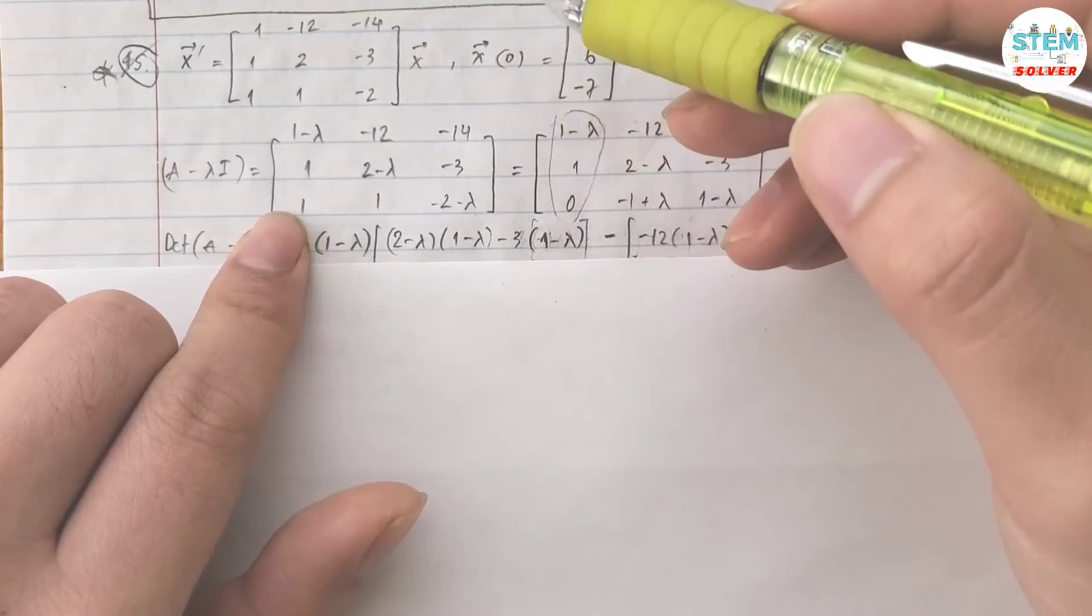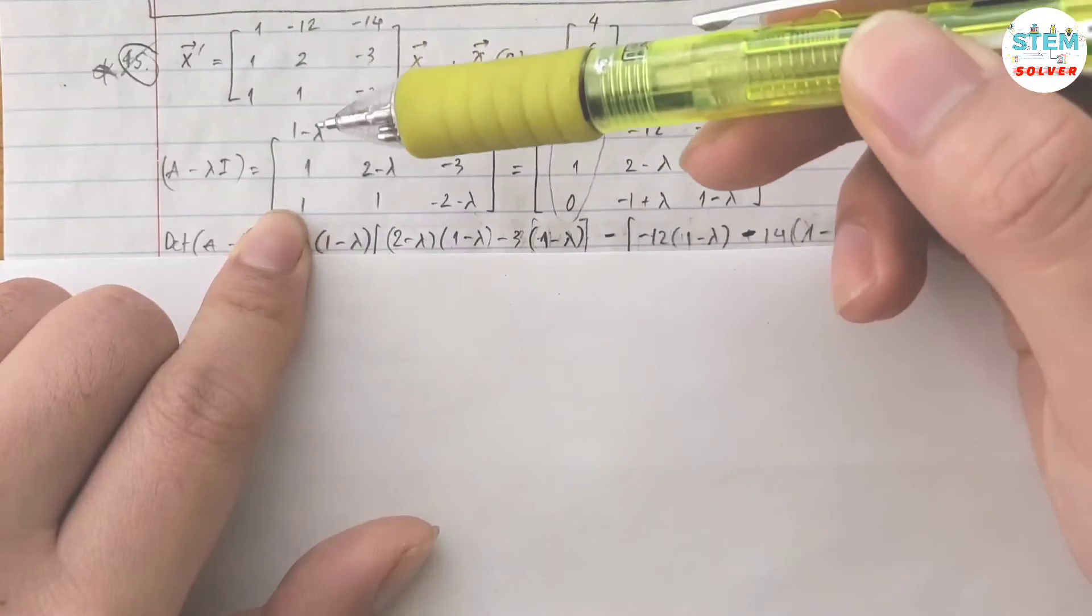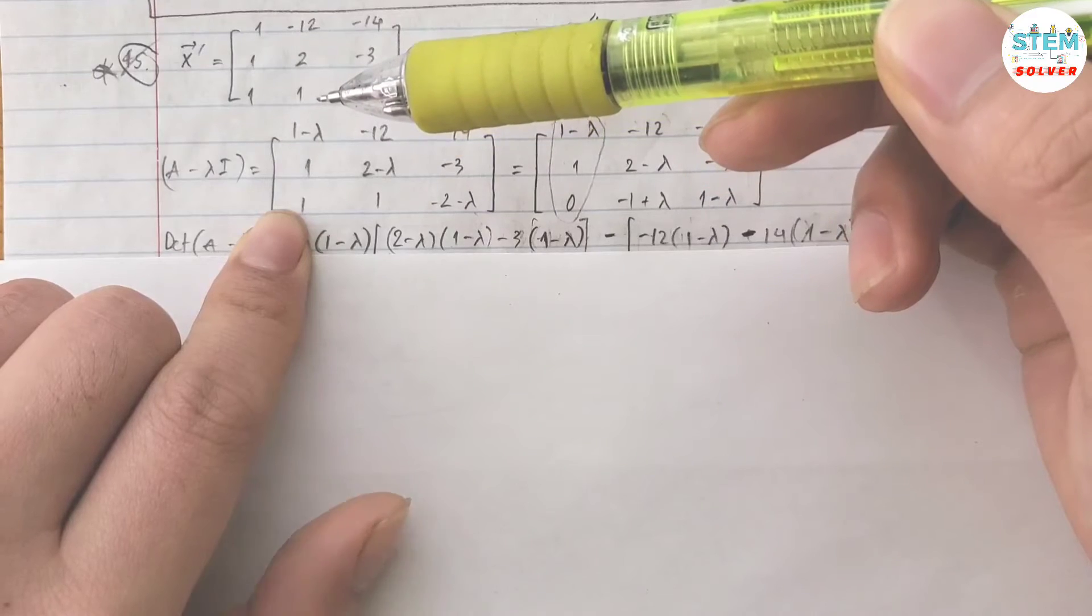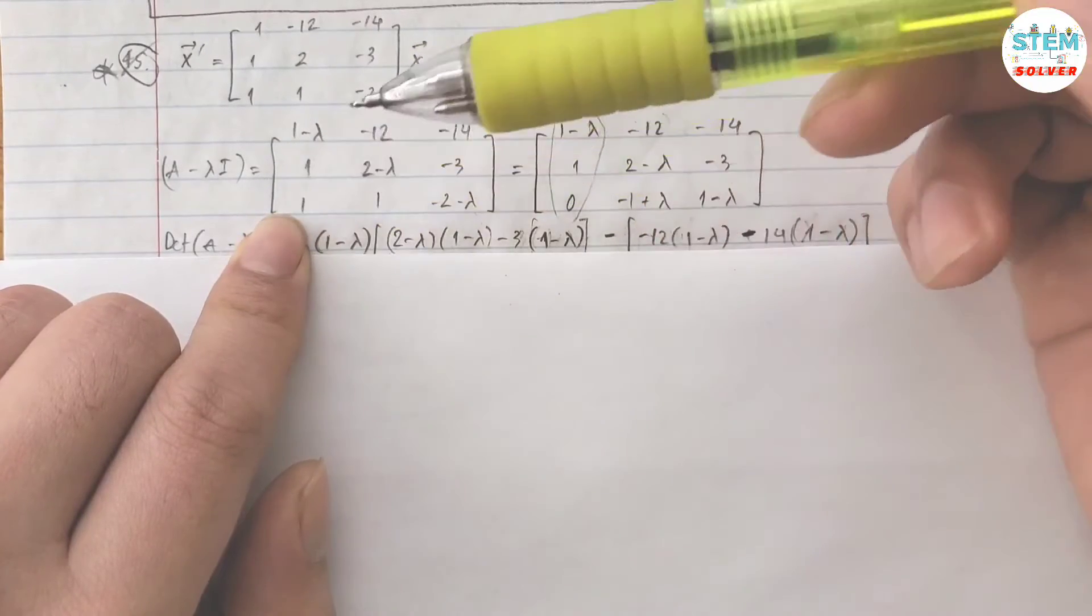So how? Well, I multiply the second equation by negative one and added up onto the third equation.